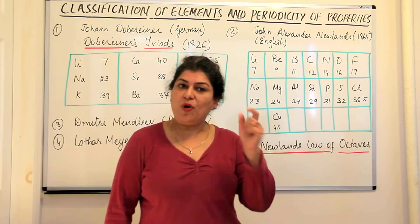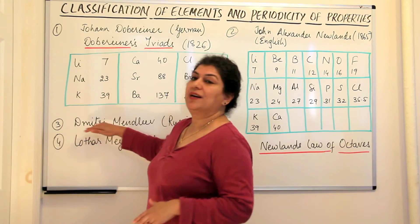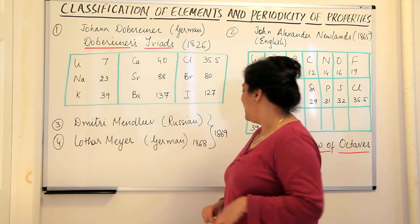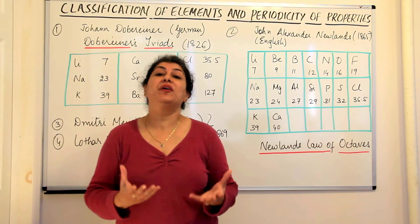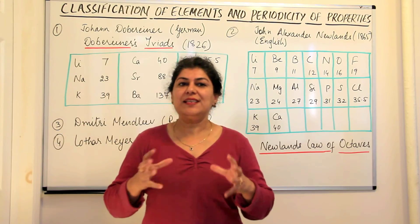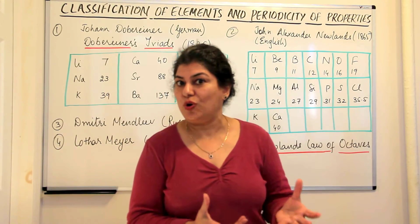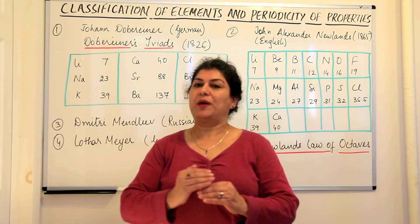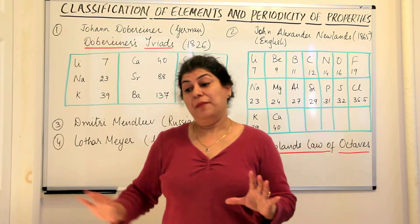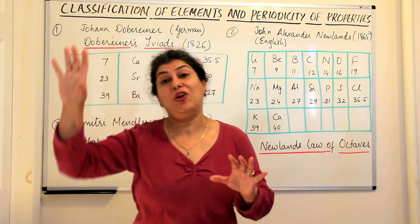This was a big leap, but the problem was that Lothar Mayer's work did not find much recognition because at the same time, a scientist called Dmitri Mendeleev — who was a Russian scientist — in 1869 gave his own periodic table and a periodic law. The work he presented kind of overshadowed Lothar Mayer's work, who had also almost simultaneously talked about the same thing.